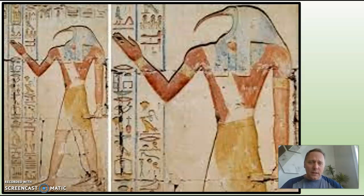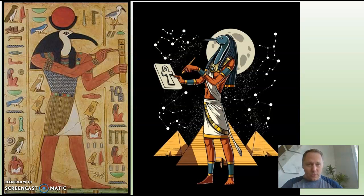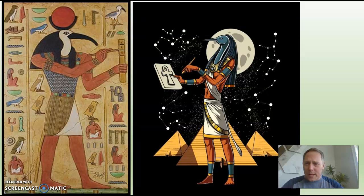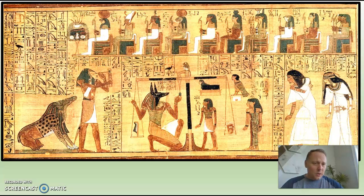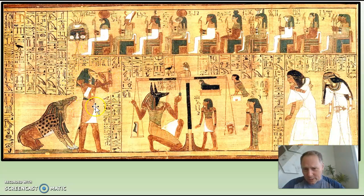Thoth is often seen carved into the walls of long dead Egyptian pharaohs in their tombs. You'll often see Thoth depicted as taking notes. He'll have a piece of paper and a pen, jotting down notes regarding whatever science and math is going on. Here in this ancient papyrus, we can see some stuff going on and there's Thoth in the background right there, taking down notes and keeping track of everything.